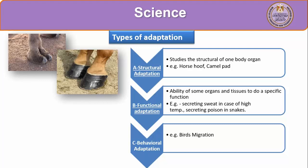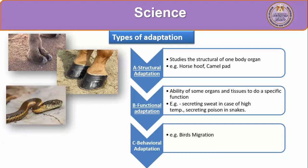The second type of adaptation is functional adaptation. In our bodies, sweat glands secrete sweat in case of high temperature, while in snakes, similar glands secrete poison. So functional adaptation is the ability of some organs and tissues to perform a specific function — for example, secreting sweat in mammals and secreting poison in snakes.